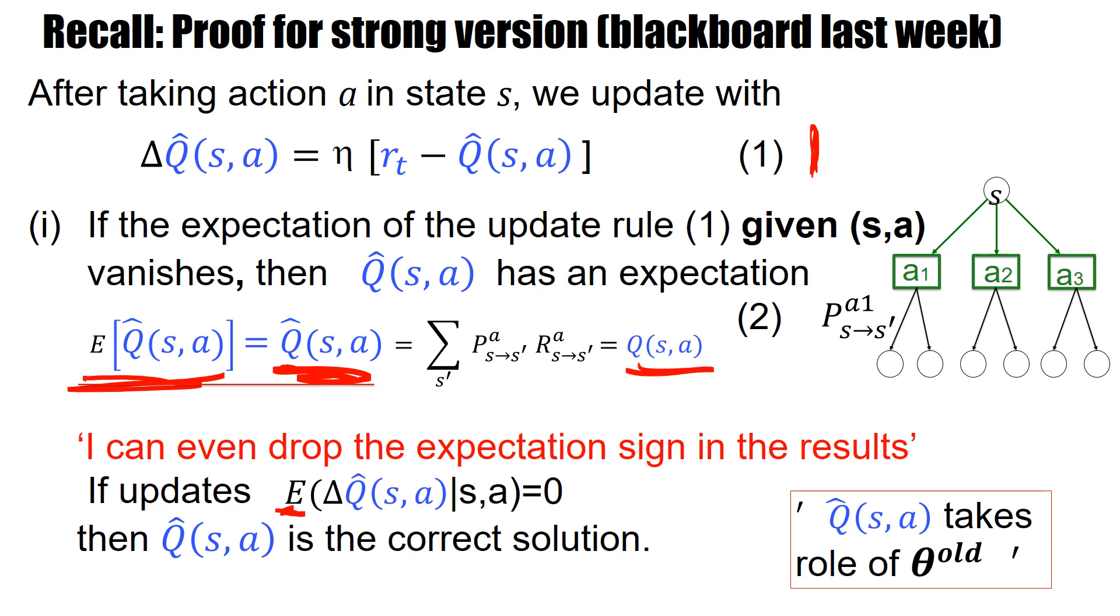Q hat is the parameter. Q hat is what I called the old parameter. And I take the expectation with fixed theta old. So during the expectation Q hat is fixed. So the expectation of Q hat is Q hat. And that's this statement that may have been puzzling at first sight.